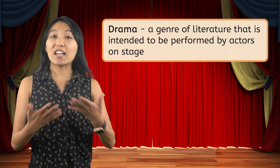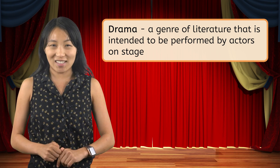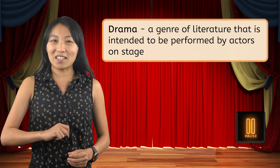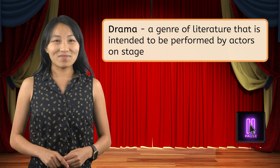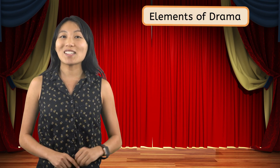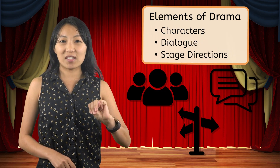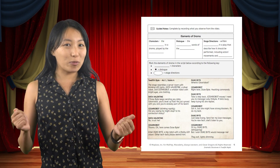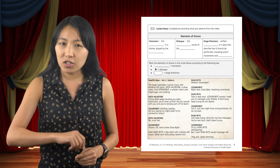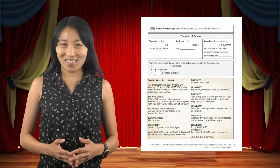Before we can dive into the elements of drama, it's important that we have a shared understanding of what drama is. In the world of literature, drama is defined as a genre of literature that is intended to be performed by actors on stage. Pause this video here and write that definition in your PDF. The key difference between drama and other genres of literature is that dramas lack narration. Because dramas are meant to be performed, their stories are told through the characters and their actions and dialogue. These also align with the three key elements of drama: characters, dialogue, and stage directions. In your PDF, you'll find a copy of Mia's play, Twelfth Byte. As we review these elements, take note of each of their definitions and annotate the play to help you recognize each of these features.